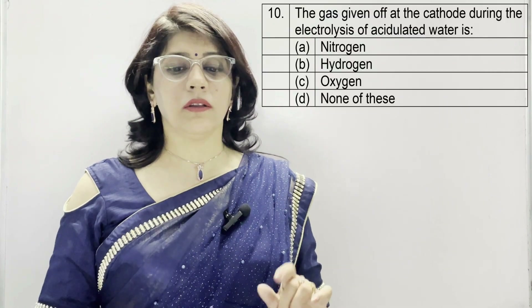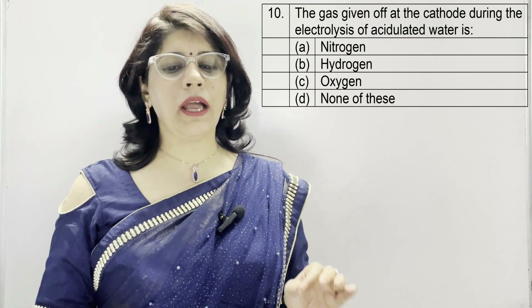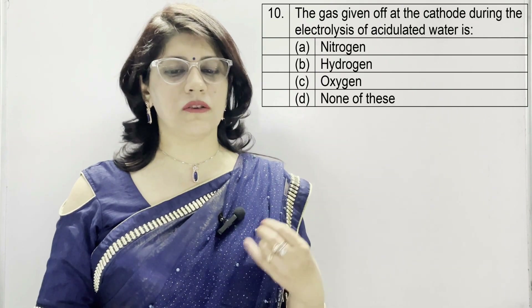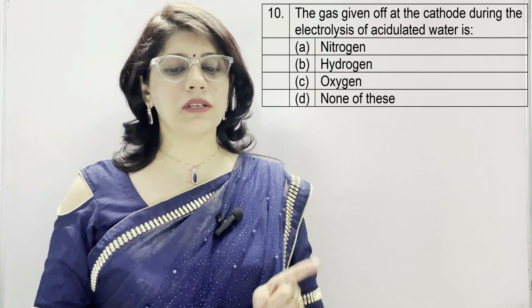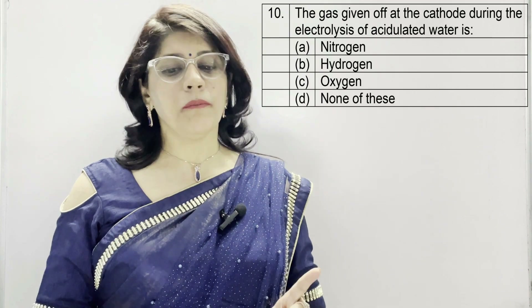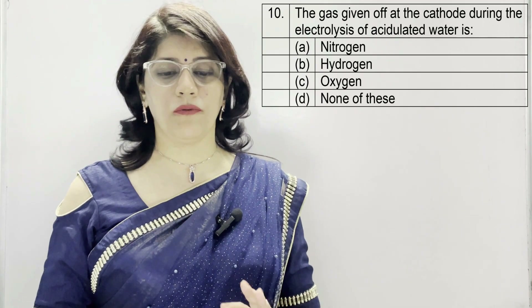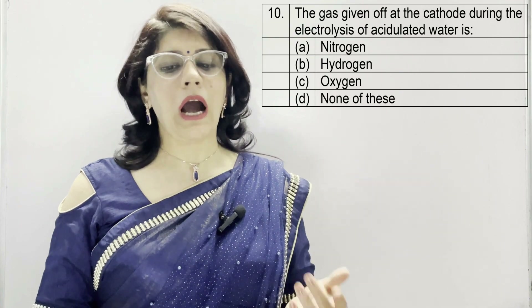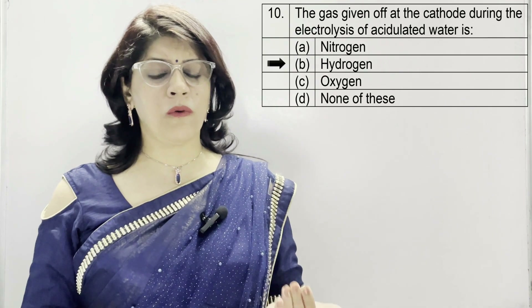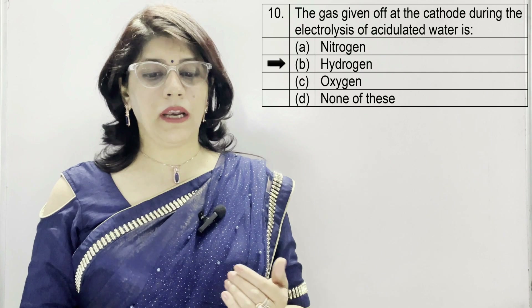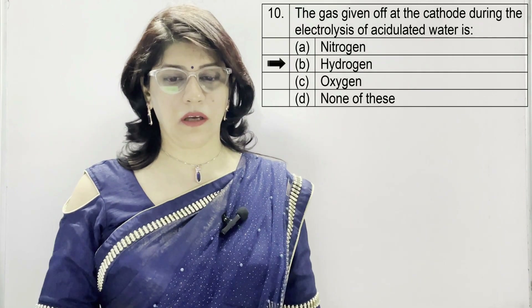In question number 10: the gas given off at the cathode during the electrolysis of acidified water is — A: nitrogen, B: hydrogen, C: oxygen, D: none of these. The correct option is hydrogen. At the cathode in acidified water electrolysis, hydrogen is given off.